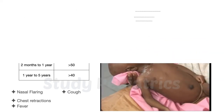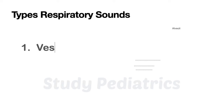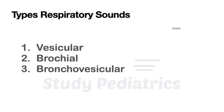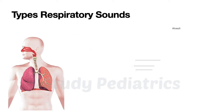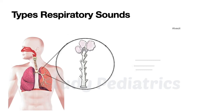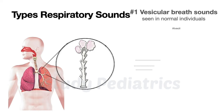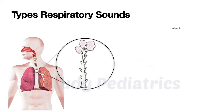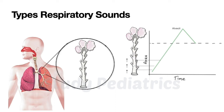Now let's see the types of breath sounds: vesicular, bronchial, and bronchovesicular. We can understand them with a line diagram. Using a graph with x and y axes, we draw the alveolar-bronchial tree along the y axis. As air moves from bronchi through narrowing bronchioles, it produces more vibration and sound, represented as an ascending line.